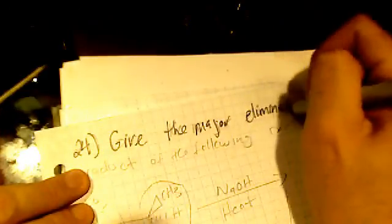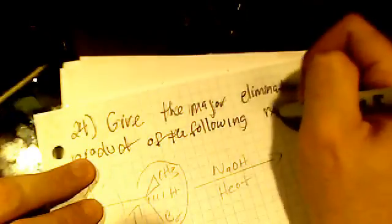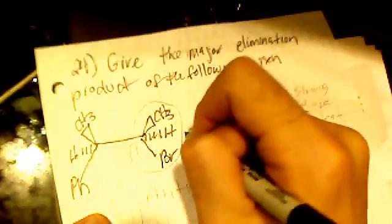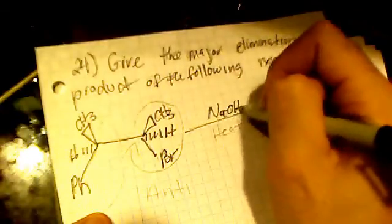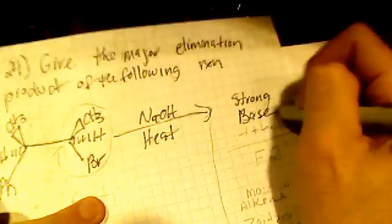Number 24. Give the major elimination product of the following reaction. So they give us CH3, there's a phenyl group, CH3, bromine, and we're treating it with sodium hydroxide and heat. So we have a strong base plus heat.